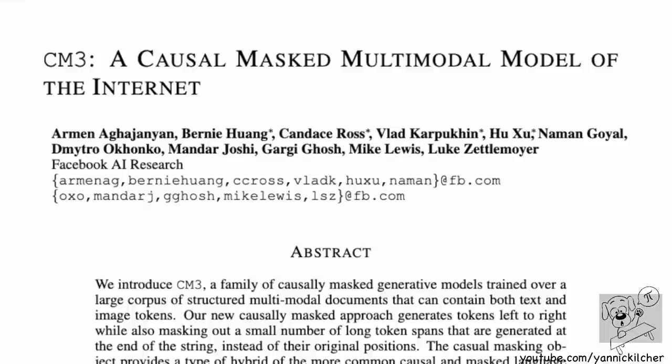It can do what DALL-E does - generating images from text. It can caption images, it can do text summarization, it can do entity linking, and much more. I like this paper because of the idea of incorporating the structure of HTML, and the new objective is very cool. We're briefly going to go over what the paper is and does, and then jump into an interview with Arman, which is a very informative interview I suggest you give a listen.